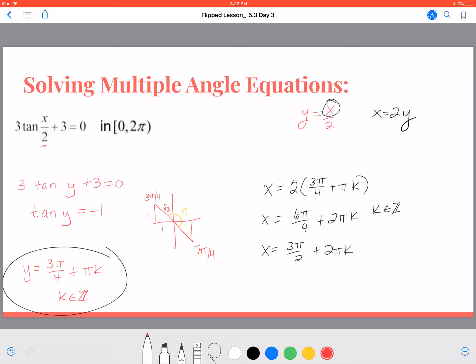Now, it wants the answers in the interval from 0 to 2 pi. So I can rewrite that as x equals our first one is 3 pi over 2. Well, if I add 2 pi to that, I'm going to be outside of the bound of 2 pi or outside that first rotation of the unit circle. So that's actually our only answer there.